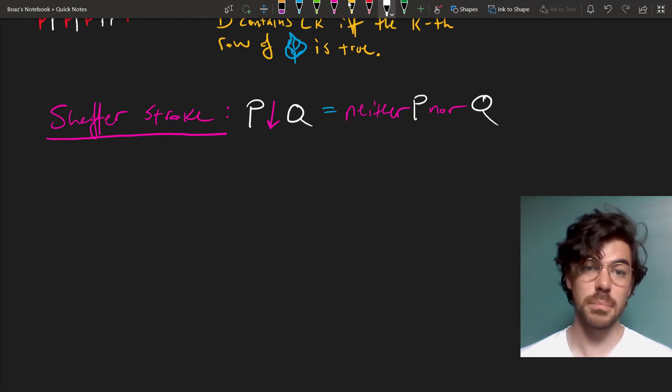Now since we've already shown that AND and OR and NOT are complete, showing that the Sheffer stroke is complete is just a relatively easy matter of showing that it can express AND and OR and NOT.